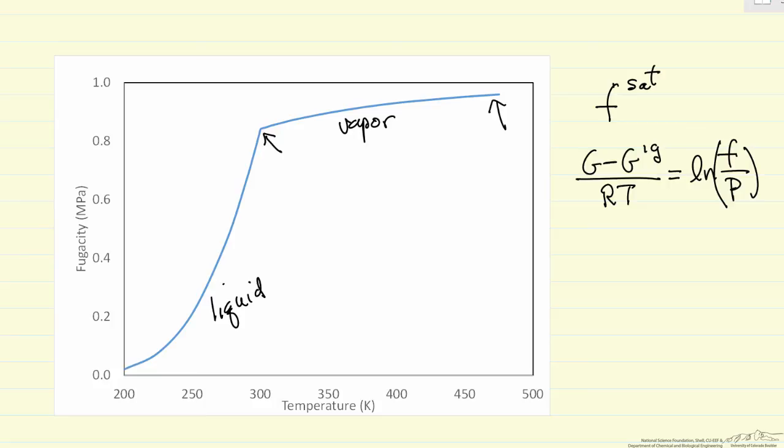Remember, at high temperatures we think of fugacity as a corrected pressure—it's close to the pressure of the gas. But at low temperatures it's quite far from the gas pressure. Over the entire temperature range, fugacity increases as we increase the temperature for a single component.